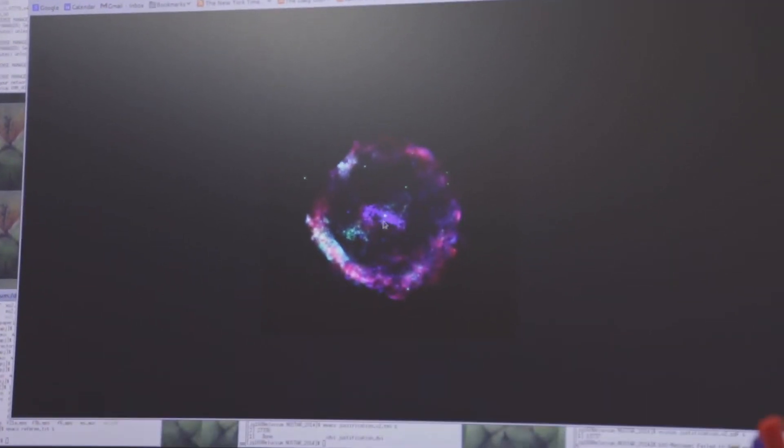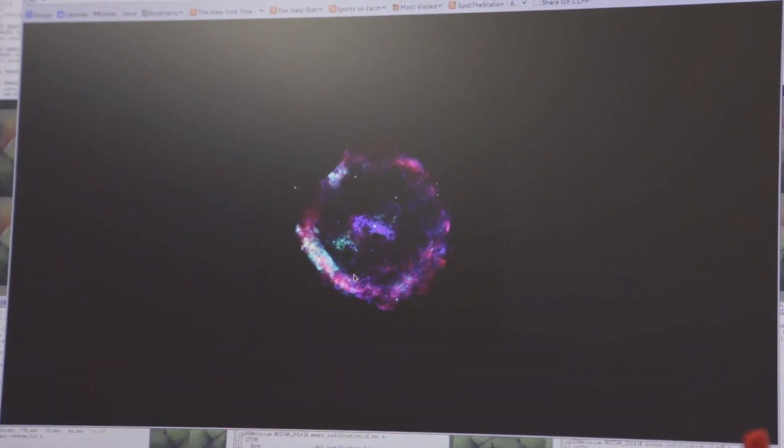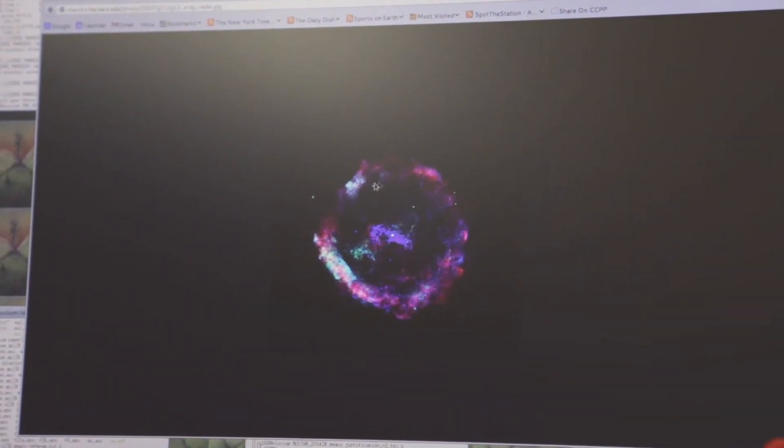The neutron star is the size of Abu Dhabi Island. This big ring around it is the hot gas produced in the supernova explosion - that's the supernova remnant. You might notice around this neutron star is this sort of fuzzy blue stuff.